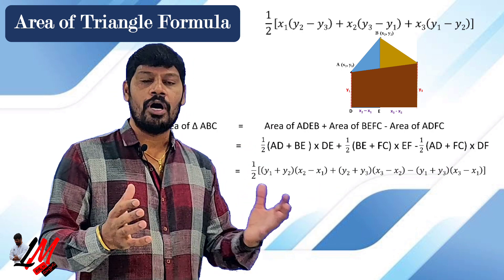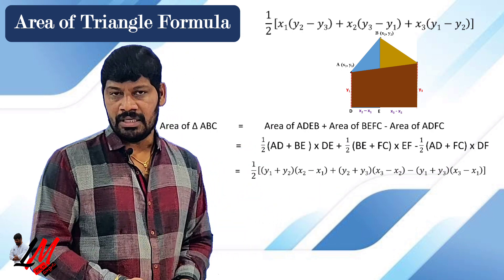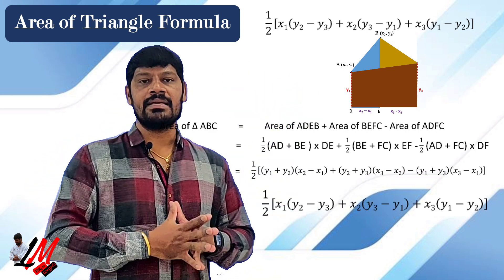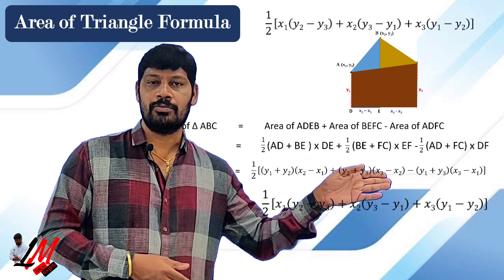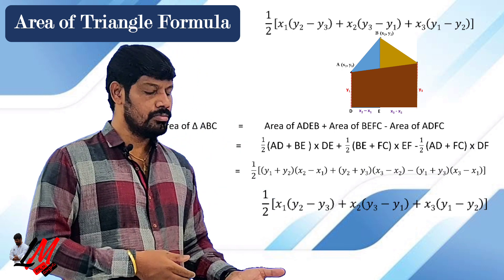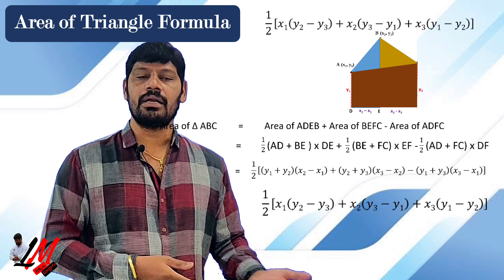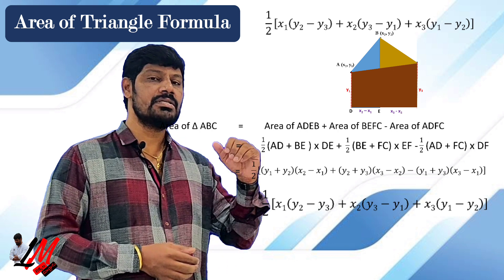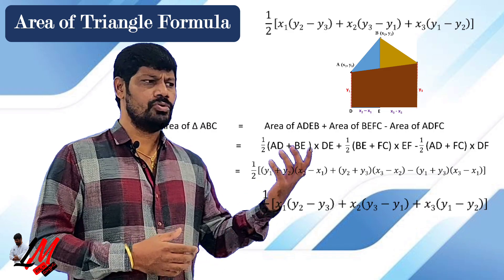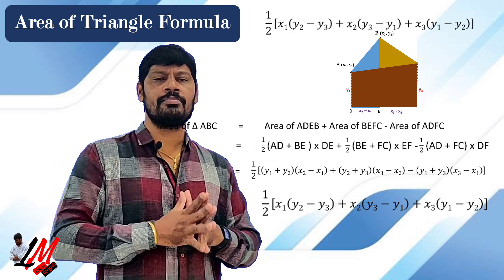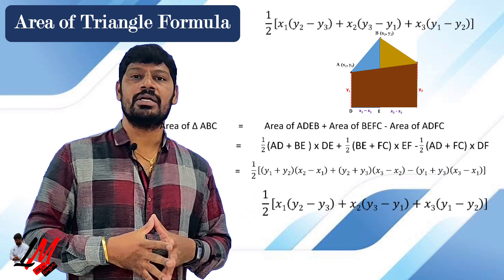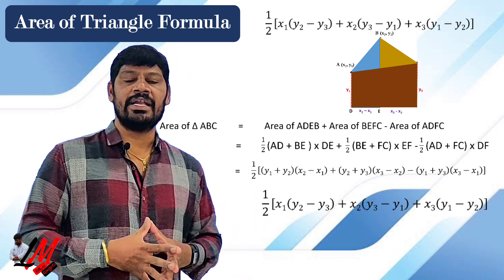If you simplify and arrange in proper order, what you get is nothing but the area of triangle: half into [x1(y2 minus y3) plus x2(y3 minus y1) plus x3(y1 minus y2)]. This is how we derive the formula. So this is how the formula has actually been arrived at, and I hope you understood this particular derivation.